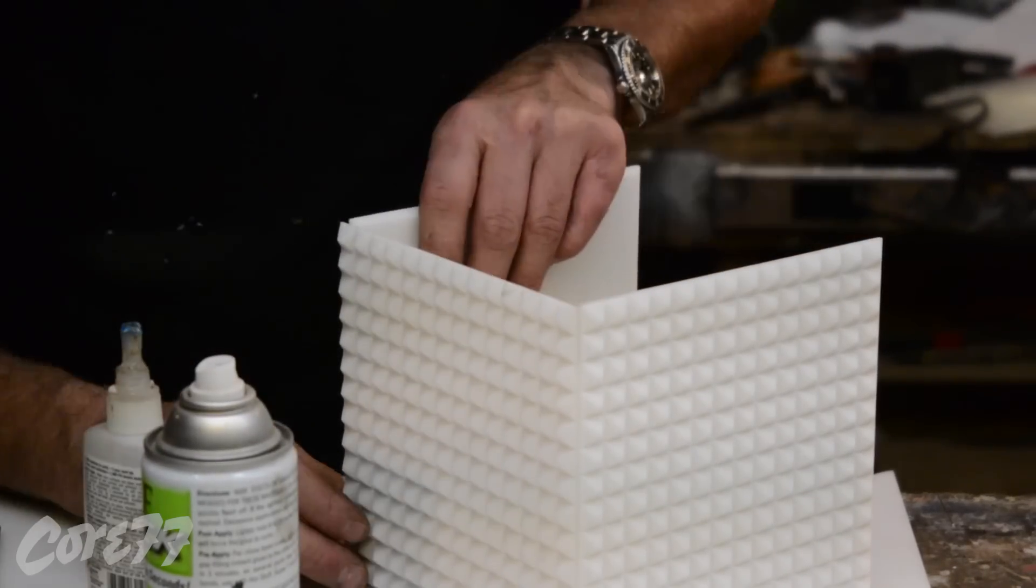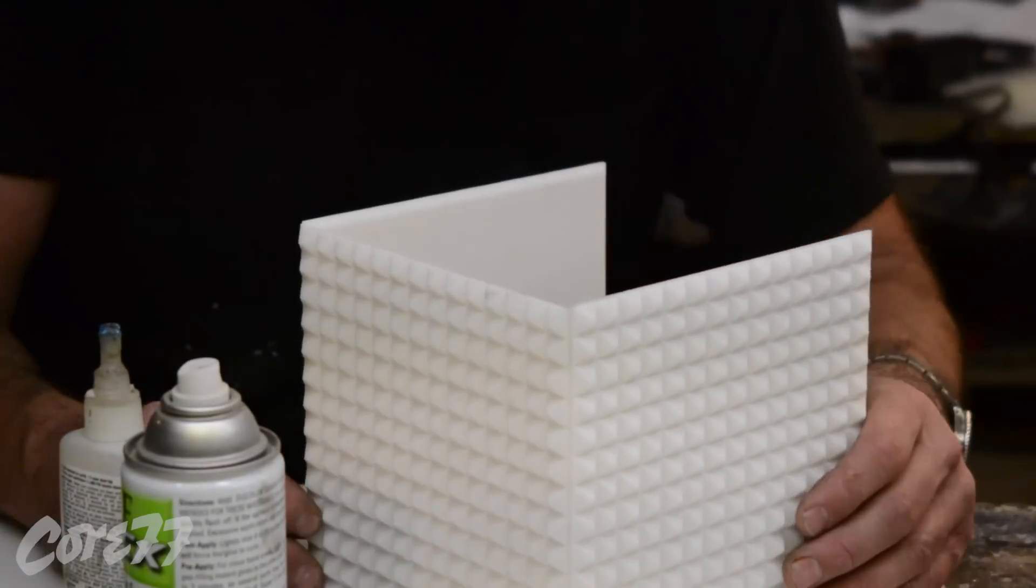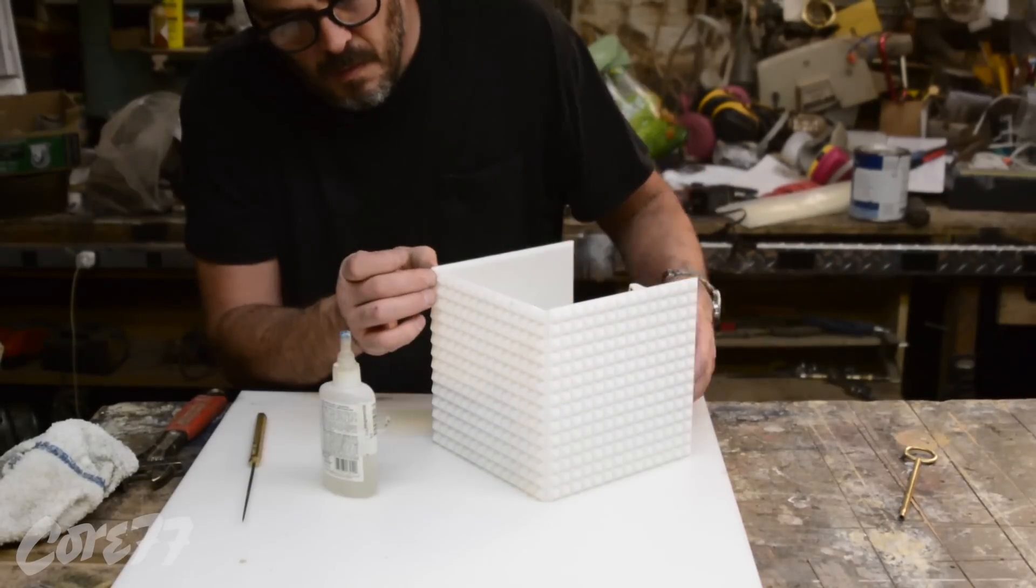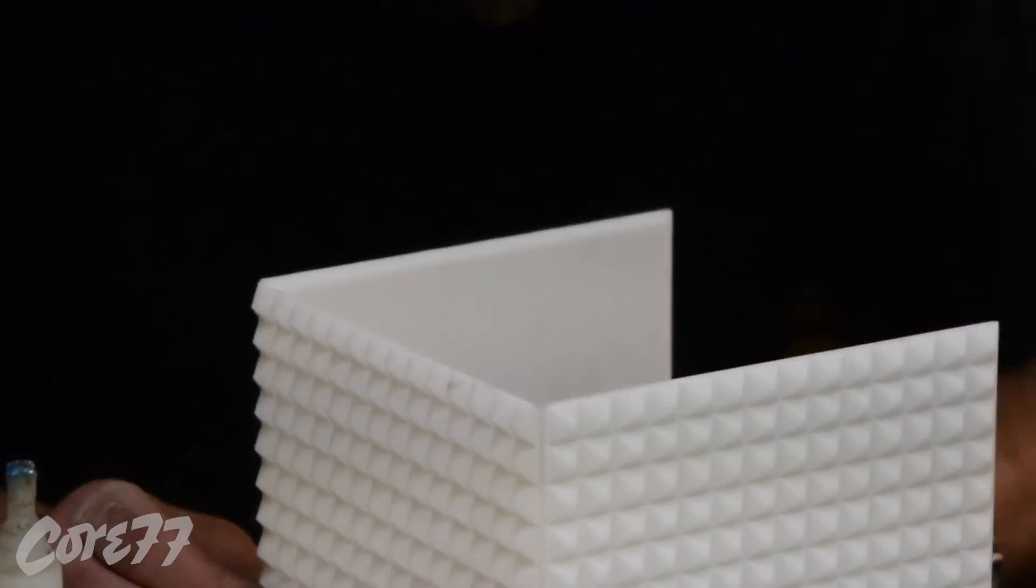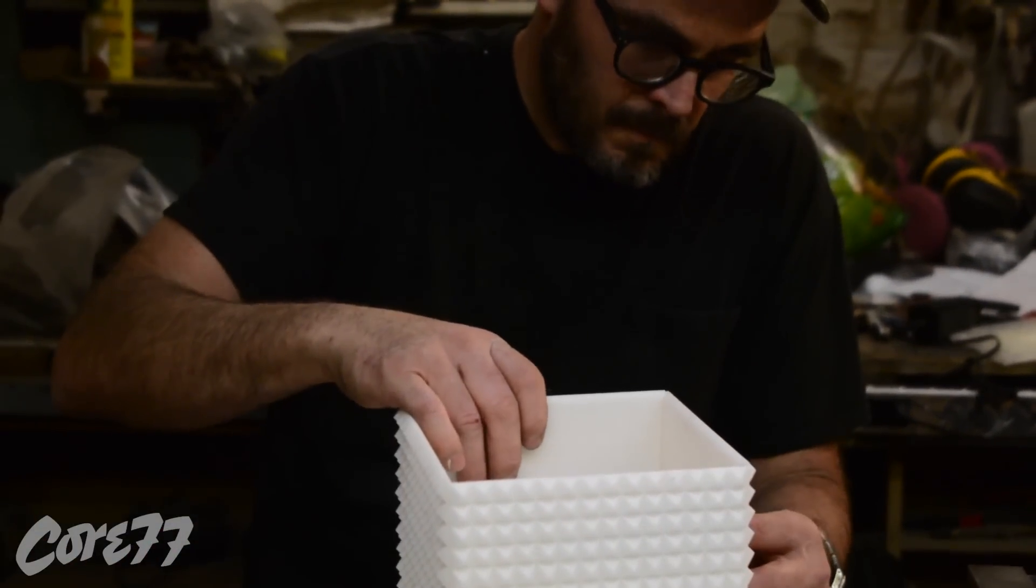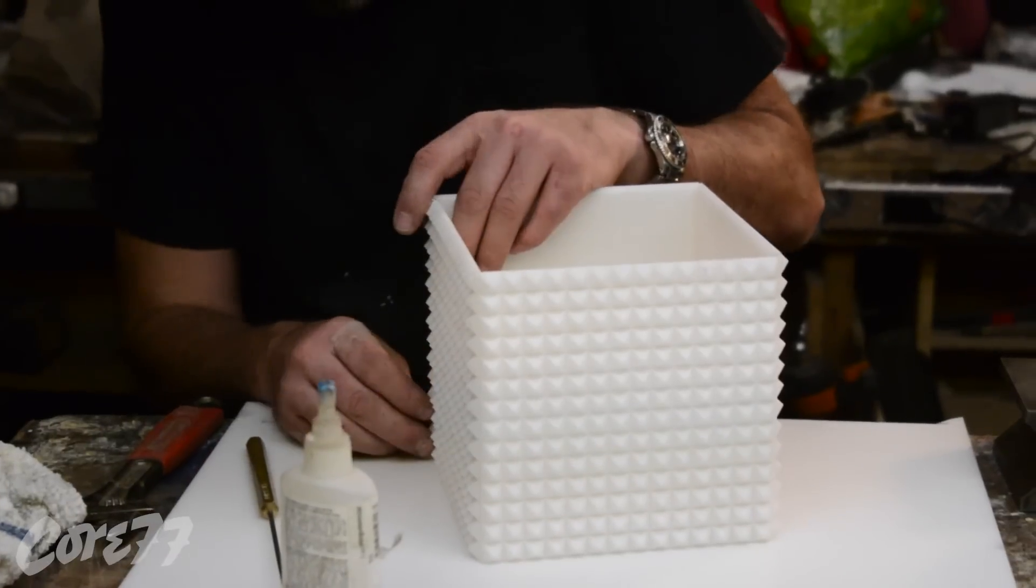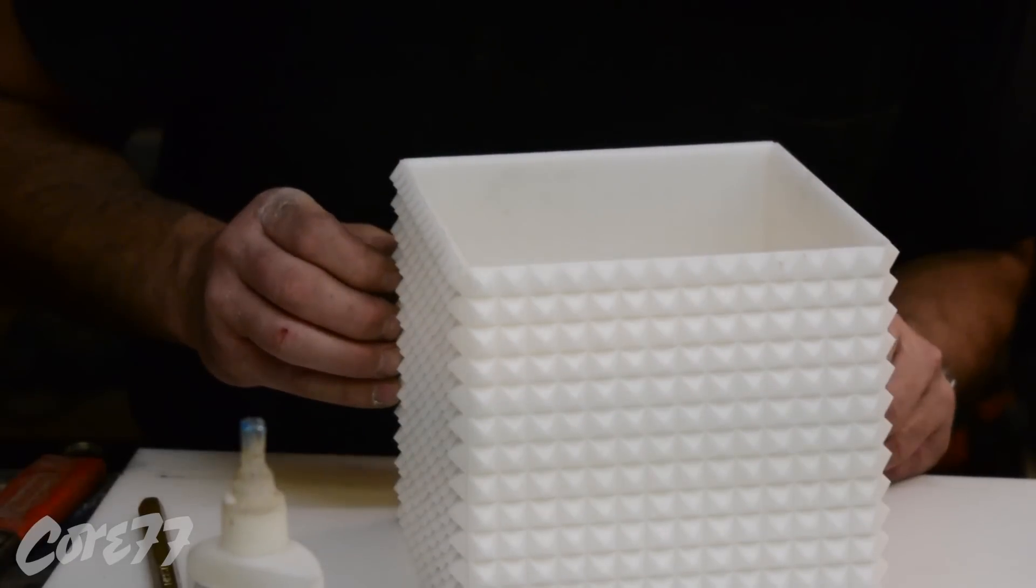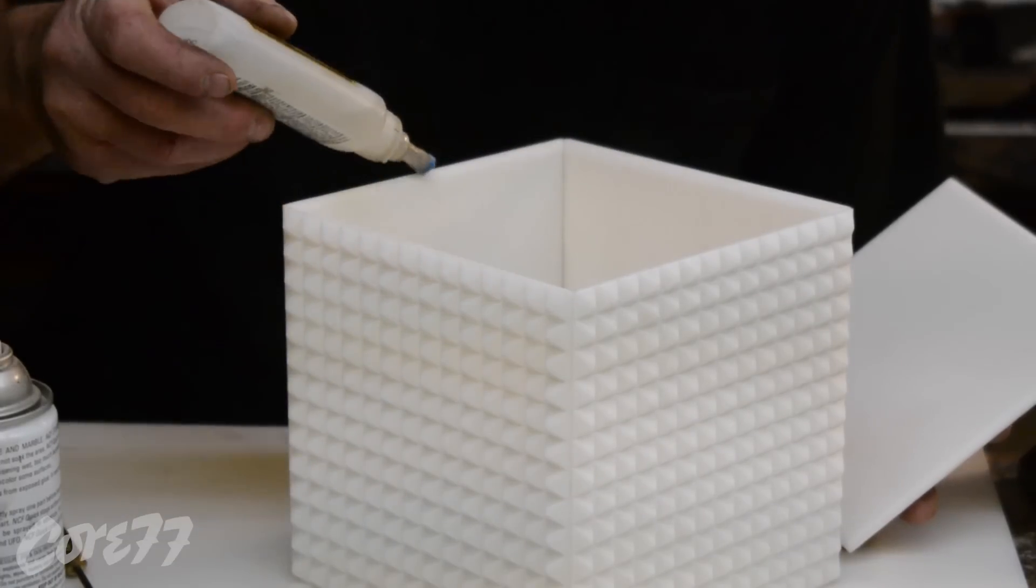Now I'm gluing on the other side there. A little bit of activator. A little bit of glue. I'm tacking it and then I put a better joint once I know it's tacked. The CA glue can be very messy if you lose control of it. So that's why I use it in small doses. Small little dots.